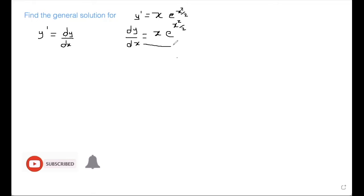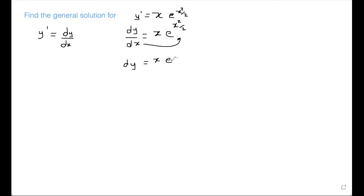Next, I'm going to carry the dx over the equal sign, so basically separating. Since x is on the right hand side, that is why I have dx on that side. So it's like separation of variables — y on one side, x on the other side, but there's no y there. So this is what we're going to do: we're going to integrate both sides.